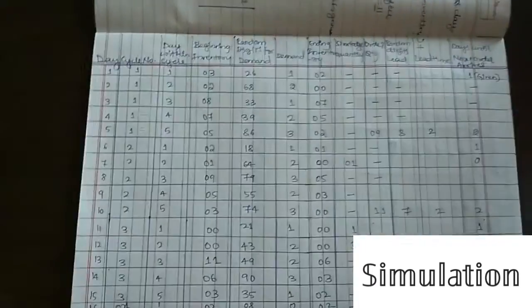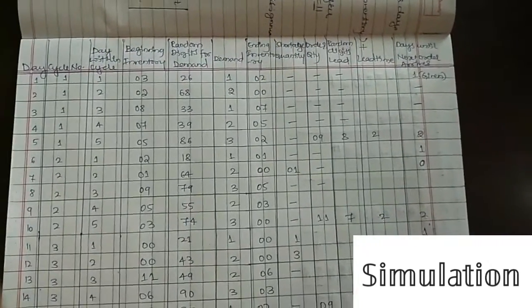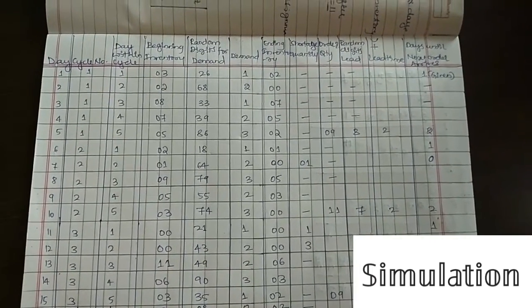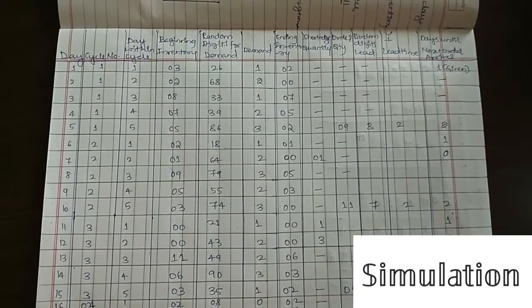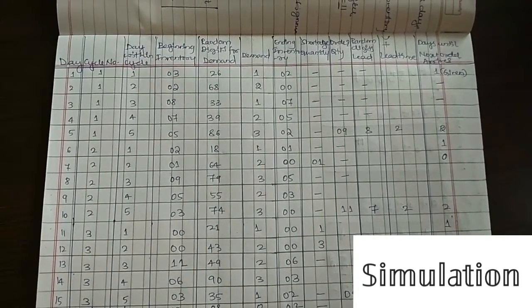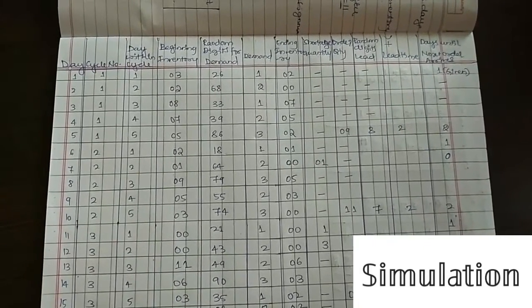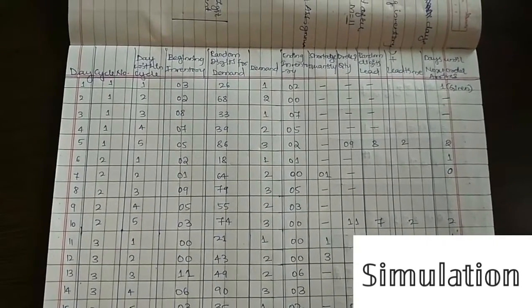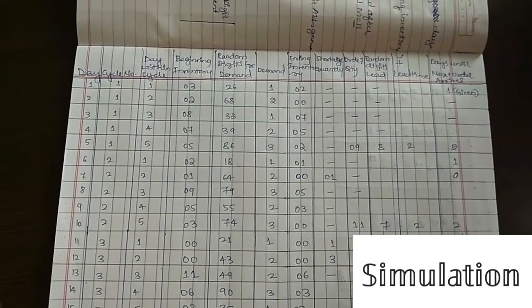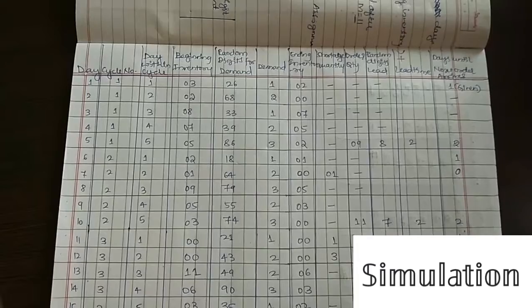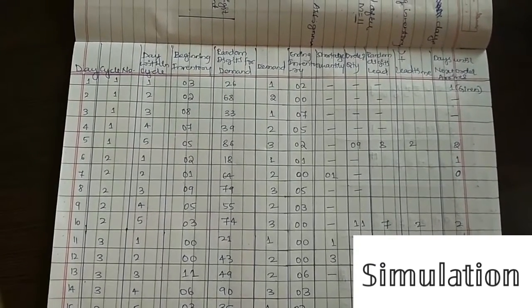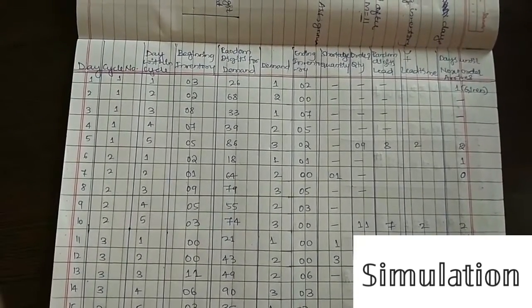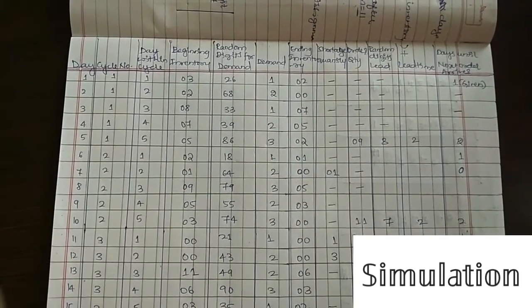In the tabular column, remember the column headers. They have asked us to simulate for 25 days — that is five cycles, each cycle containing five days. The maintenance is reviewed after five days. The order is placed at the end of each cycle, meaning on the fifth day of each cycle. The order up to level M is 11 and the review cycle N is 5.